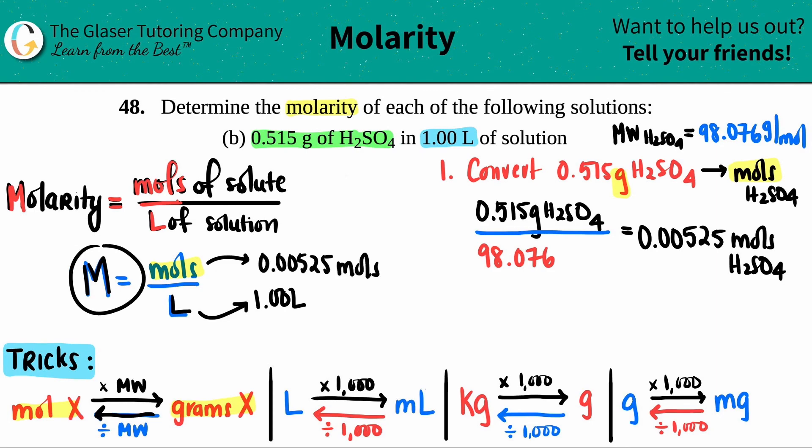We can finally solve for molarity. Molarity equals 0.00525 divided by one liter. Anything divided by one is just one, so this is 0.00525.